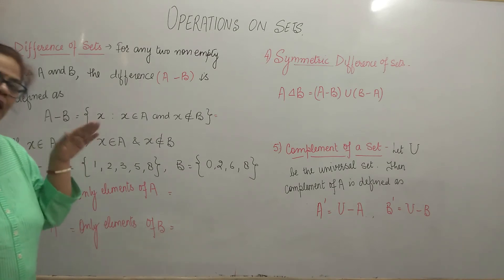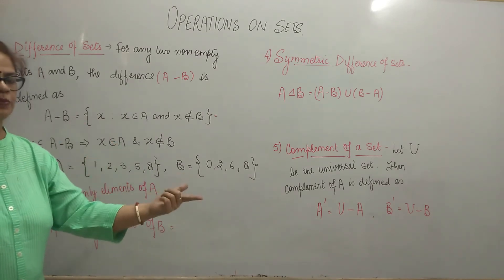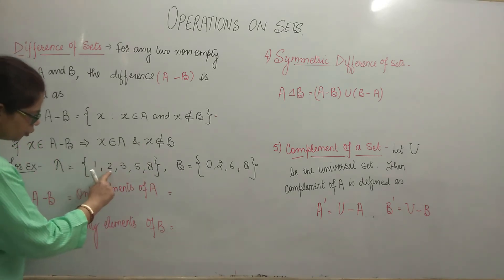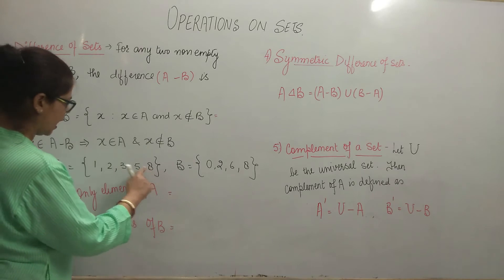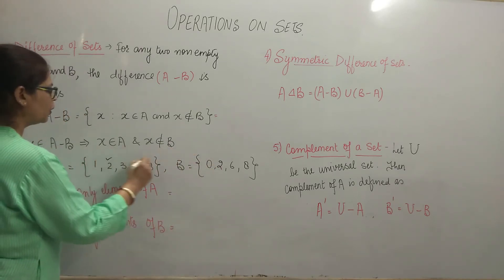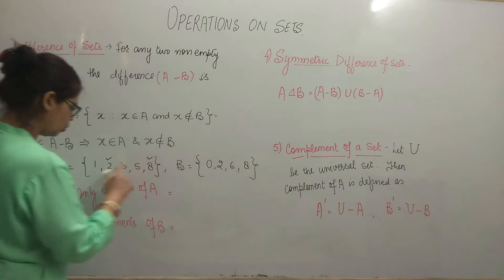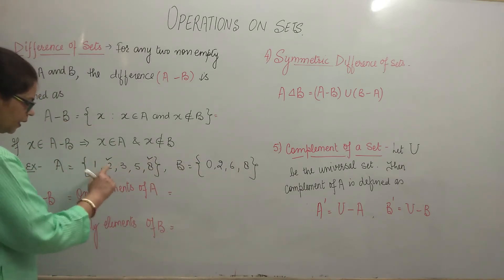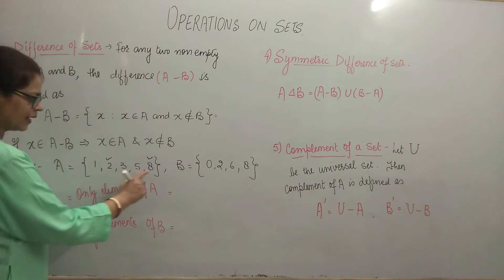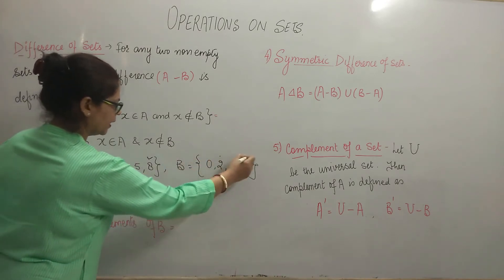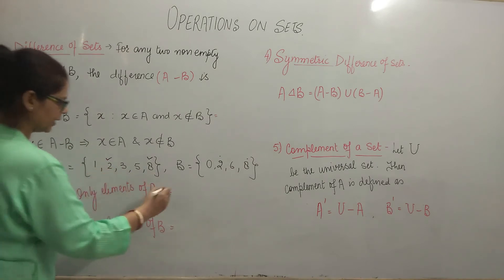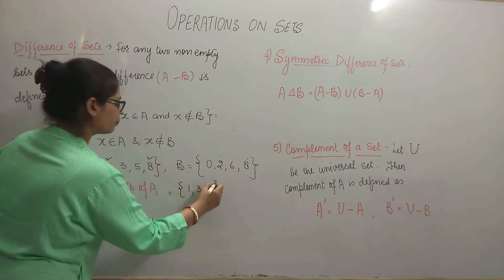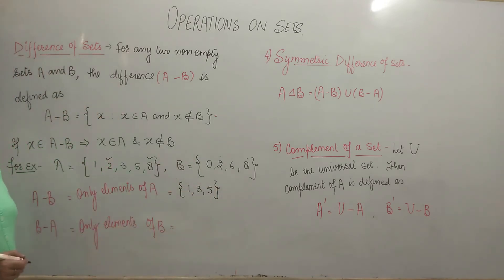A minus B mein woh elements nahi aayenge jo B ke paas bhi hain aur A ke paas bhi hain. Common elements kaun se hain? 2 and 8. So A minus B means only elements of A — joh B ke paas bhi hain, yani 2 and 8, inko aap chhodd denge. So aapke paas elements aaye 1, 3 and 5.